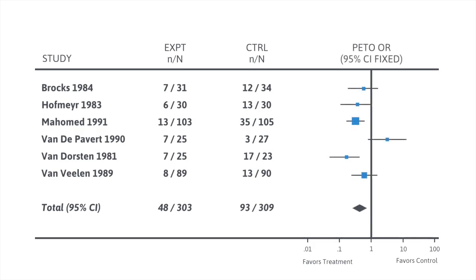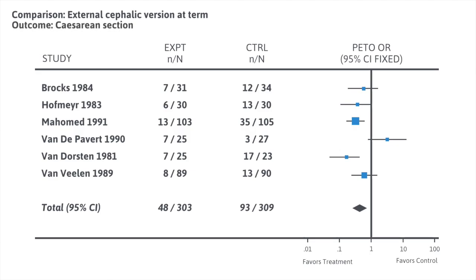In this particular example, the comparison examined external cephalic version at term to prevent breech delivery, and the outcome was cesarean section. In the first study by Brocks in 1984, there were 31 patients who had an external cephalic version at term and seven of those ended up with a cesarean section. In the control group, where they did not have the external cephalic version, 12 of the 34 women ended up with a cesarean section.